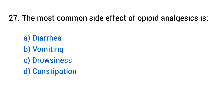Question number 27. The most common side effect of opioid analgesics is. The right answer is option D: Constipation.